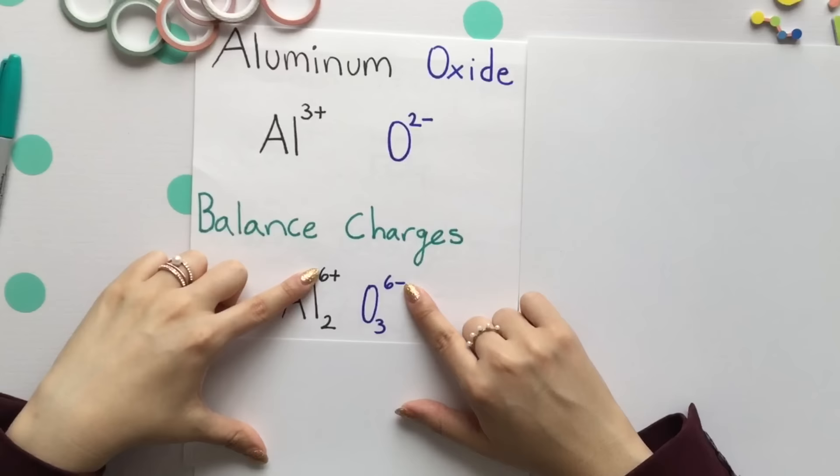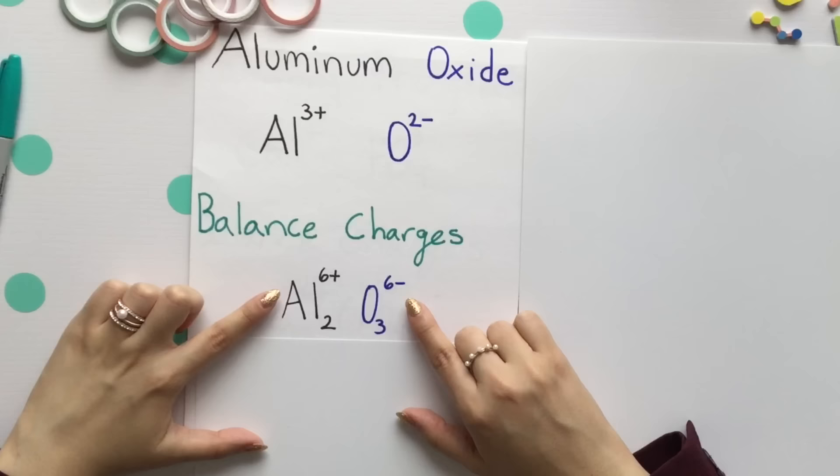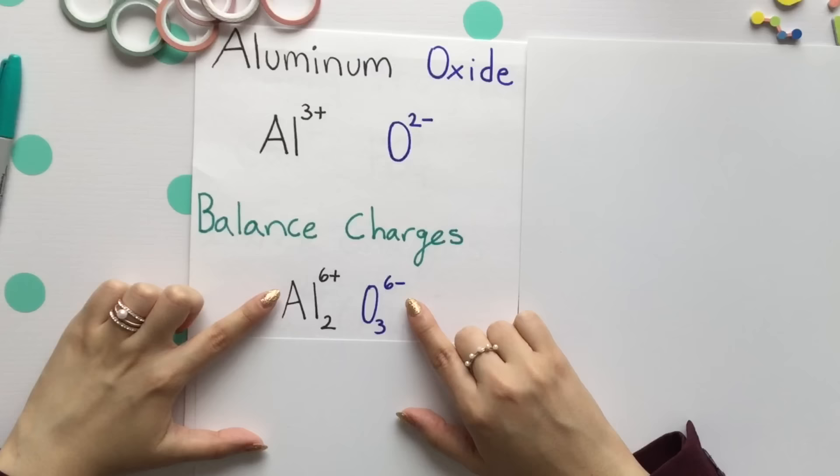We want these charges to be the exact same. I'll place a 3 subscript on oxygen. That turns this 2- to a 6- charge, and our charges are balanced.